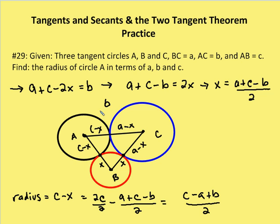I know that AC is equal to B, so this length A to C equals B. So B equals C minus X plus A minus X, which ends up being A plus C minus 2X. So A plus C minus 2X equals B. I can rewrite that as A plus C minus B equals 2X, or X equals A plus C minus B over 2. So I'm rewriting the value of X in terms of A, B, and C.